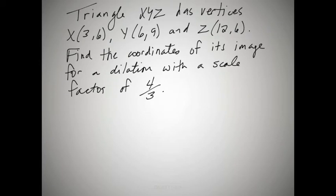Let's take a look at one where you're going to have to actually do a dilation with more than just one point. Here we have X at (3, 6), Y at (6, 9), and Z at (12, 6). And we're going to use a dilation of 4/3. Now, as I stated earlier, when the scale factor is greater than 1, it's going to be an increase in size. And when the scale factor is less than 1, it's actually going to be a decrease in size.